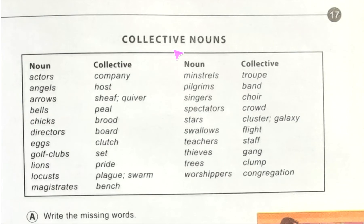Hello. I'm going to discuss Junior English Book 4, page number 17. Today's topic is collective nouns. You already know what a collective noun is — I discussed it when I took a class about Brighter Grammar Book 2, Lesson 2. There we covered collective nouns. Some nouns are the names not of just one person or thing, but of a whole collection of people or things considered as one.